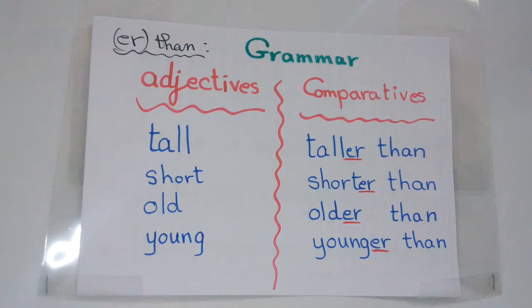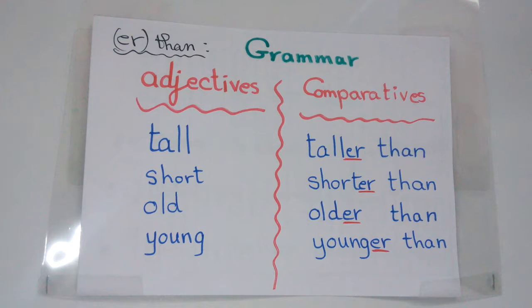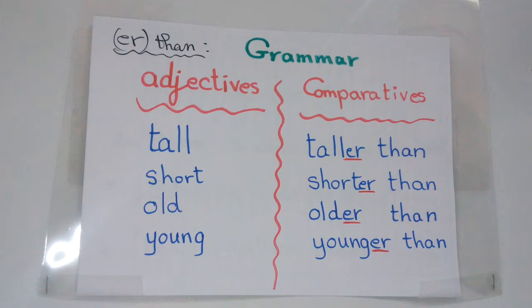Let's look at column number one, which is called adjectives — الصفات. Let's read them together: tall, short, old, young.